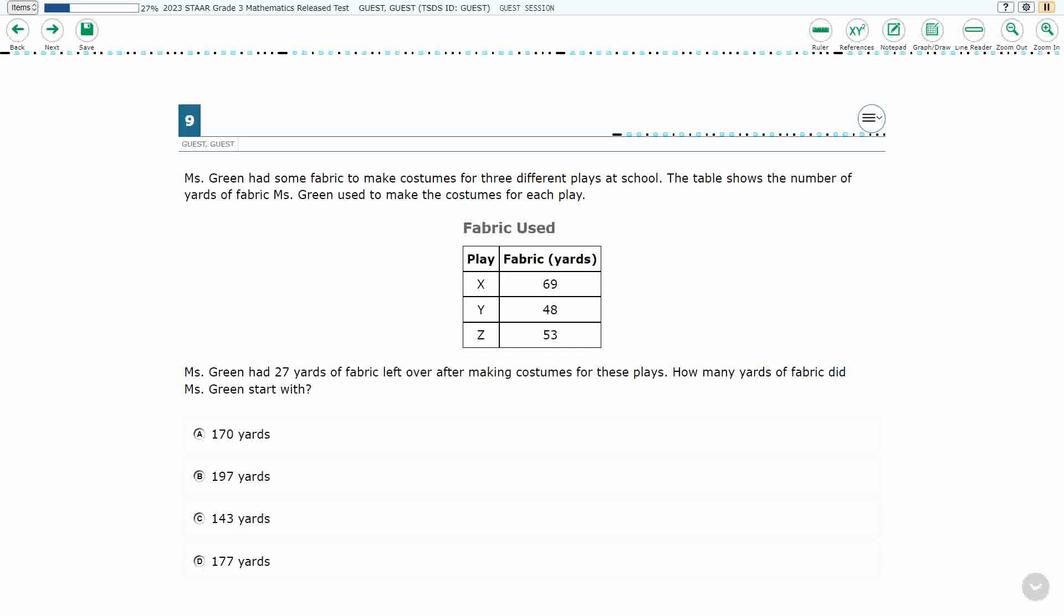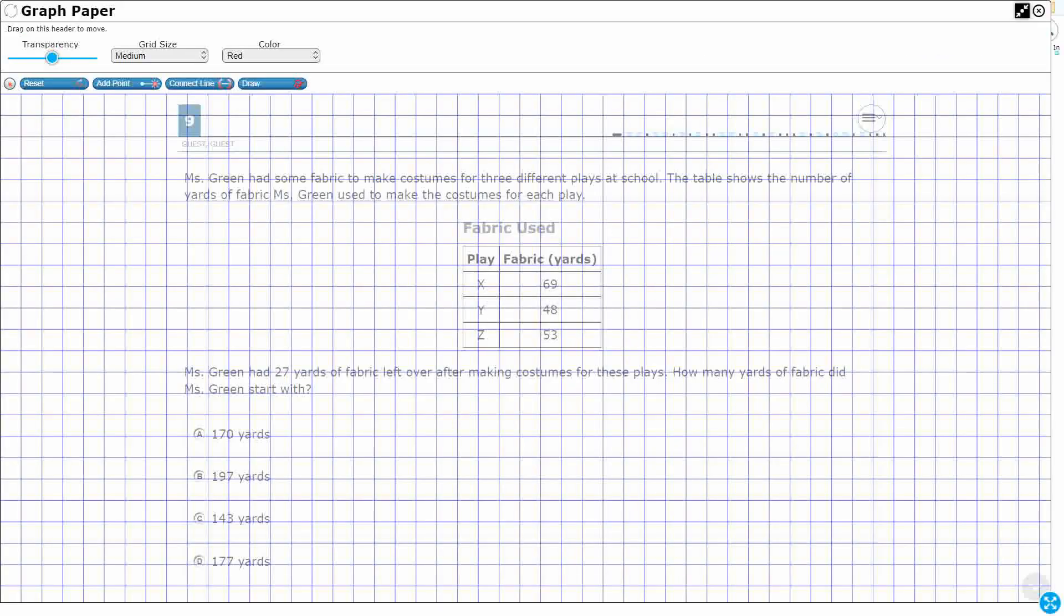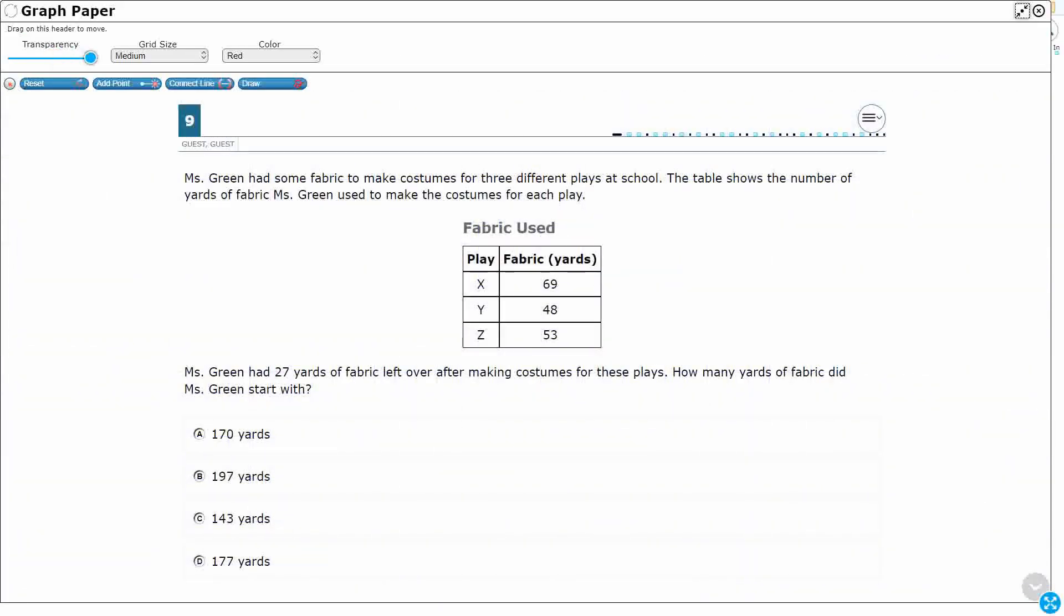Ms. Green had some fabric to make costumes for three different plays at school. The table shows the number of yards of fabric that Ms. Green used to make the costumes for each play. So we've got our table here. It looks like we've got Play X. I don't know why we would call it Play X, but that's fine. Play X uses 69 yards, Play Y uses 48 yards, and Play Z equals 53 yards.